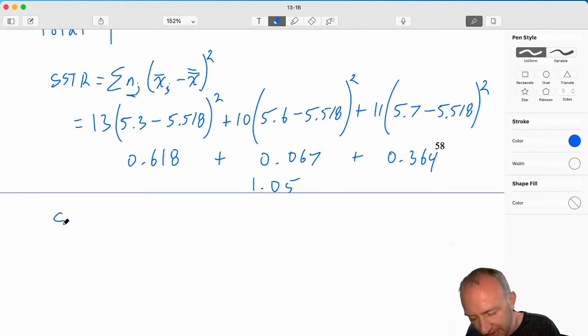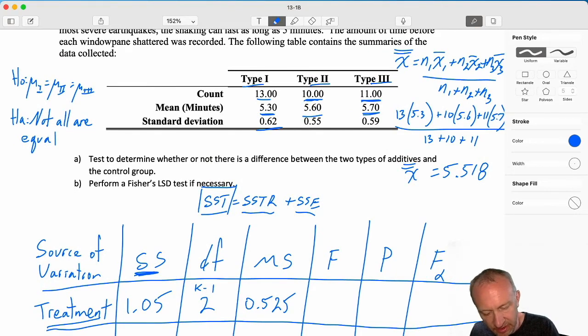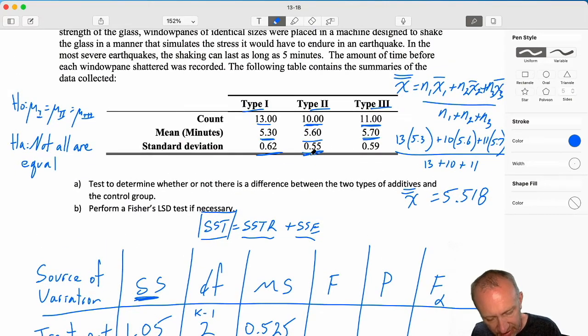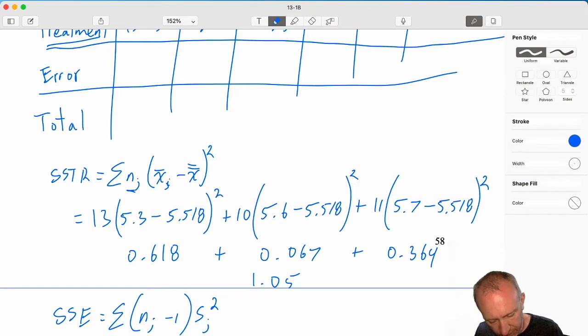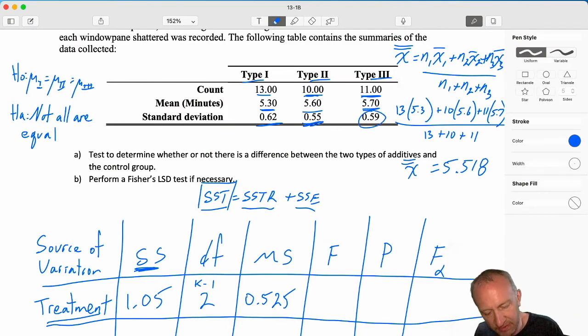Next one, SSE. SSE is looking at adding up NJ minus 1 times that standard deviation squared, so the variance. So here I have our first one was 13 minus 1, and that standard deviation here is 0.62. The next one is 10 minus 1 times its standard deviation, 0.55. And the next one is 11 minus 1 times its standard deviation, 0.59.